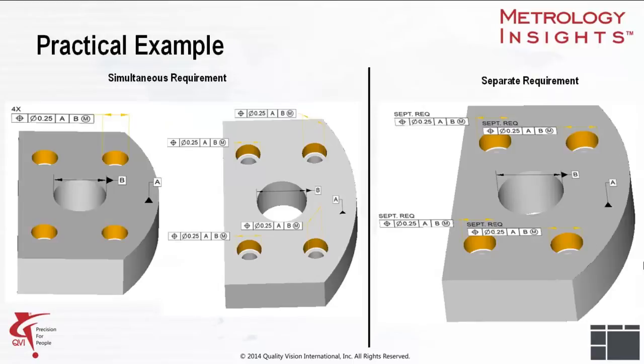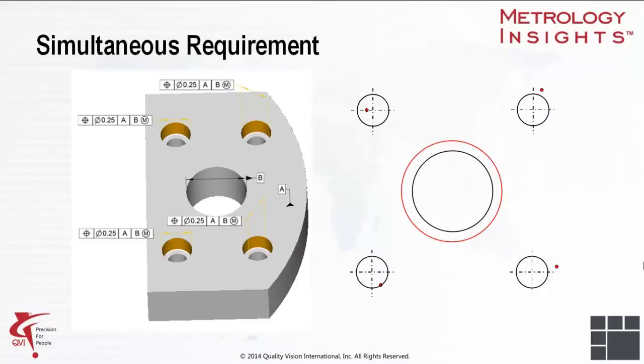On the right, we have the same four feature control frames appear with the notation Separate Requirements included with the FCF. This notation overrides the simultaneity set as default by the ASME standard. Datum B is simulated at the maximum material boundary as shown by the M modifier. This part could be inspected by a hard gauge where the datum is simulated at the virtual condition. This gives mobility to the feature control frame.